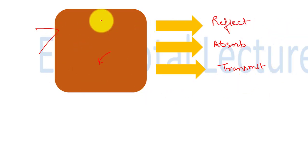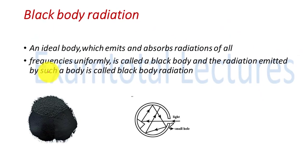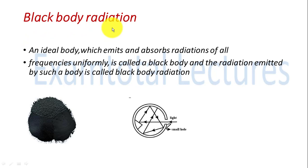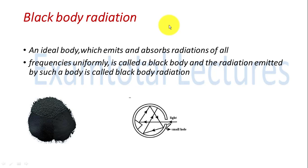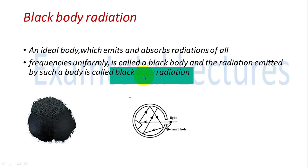An ideal body called a black body would emit and absorb radiation of all frequencies uniformly. Practically, when electromagnetic radiation falls on a body, it reflects some, absorbs some, and transmits some. A black body is a theoretical body that does not actually exist. Carbon black is close to a black body but is not perfect or ideal. So scientists described a black body as a cavity with a small hole and an inclination inside, so that when incident light comes in, it undergoes multiple reflections inside and is absorbed by the cavity walls — it cannot reflect back out. The radiation emitted from this cavity is called black body radiation.